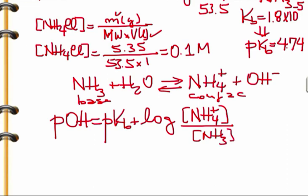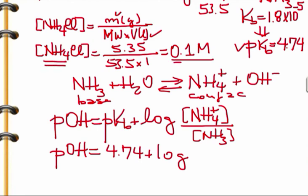We plug in the numbers: pKb is 4.74 plus log of the concentration of ammonium chloride, which is 0.1, over the concentration of ammonia, which was initially given as 0.2 molar.